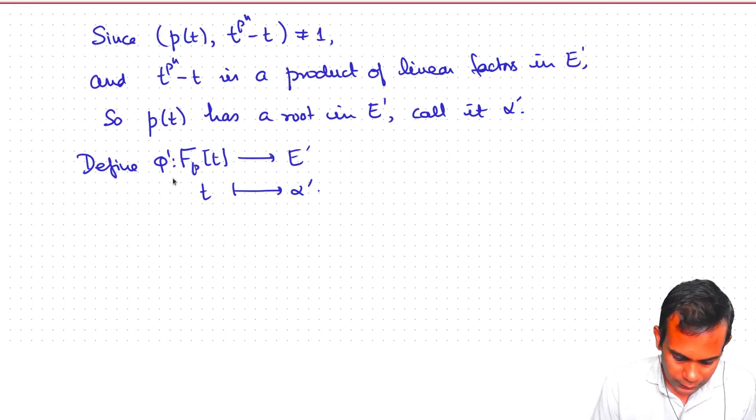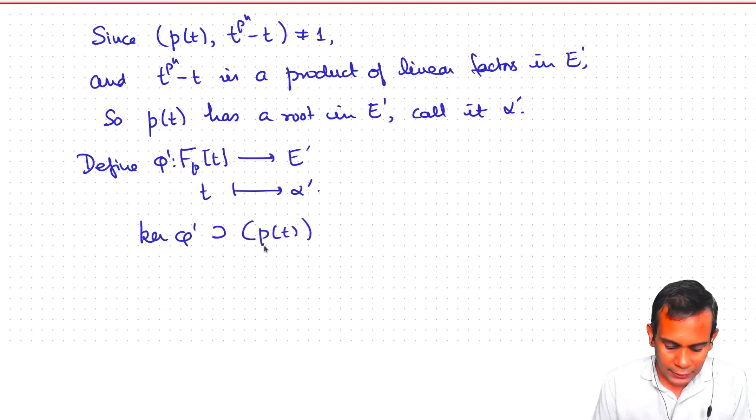Now, this homomorphism must have kernel containing Pt because alpha prime is a root of Pt. But this Pt is a maximal ideal. I mean, the kernel cannot be all of Fp[T] because this map is obviously non-zero. Alpha prime is in it. And so, this kernel phi prime has to be equal to Pt.